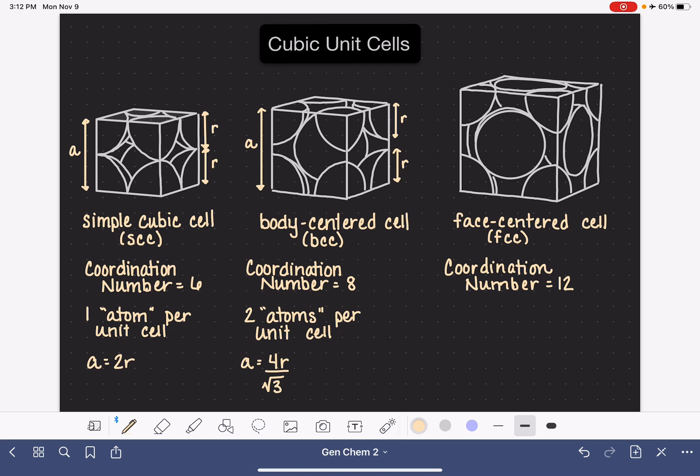What about the number of atoms per unit cell? Well, I've already said that we have eighths of an atom at every corner, every one of the eight corners of this unit cell. So altogether, the corners of the unit cell are going to add up to the equivalent of one atom.